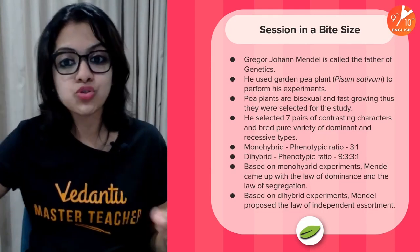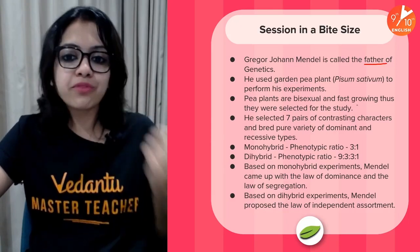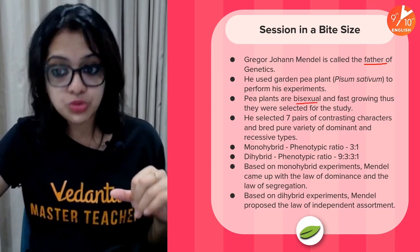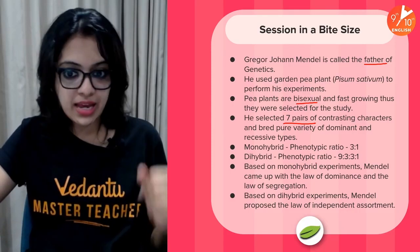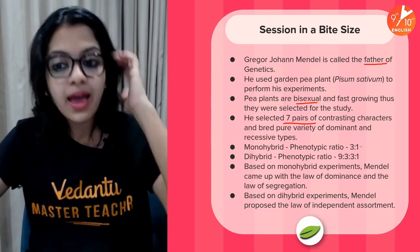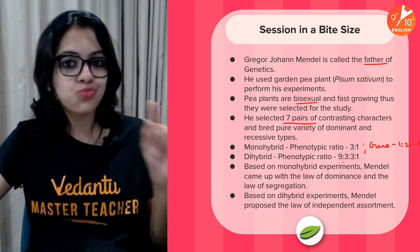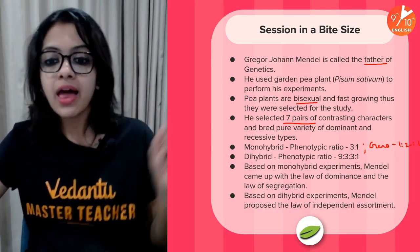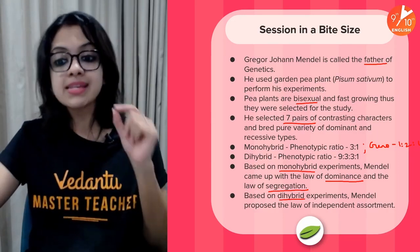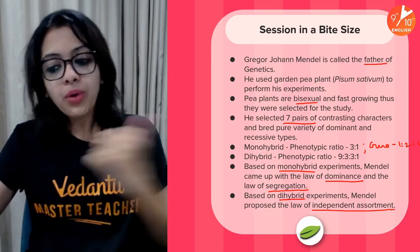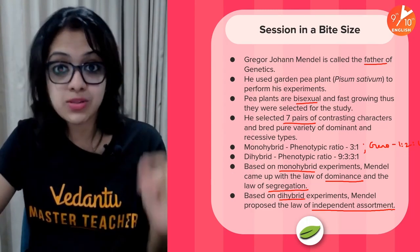Here is the session in a bite-size for quick revision: Gregor Johann Mendel is called the father of genetics. He used the garden pea plant Pisum sativum. Pea plants are bisexual and fast-growing. He selected seven pairs of contrasting characters and bred pure dominant and recessive varieties. Monohybrid phenotypic ratio is 3:1 and genotypic ratio is 1:2:1. Dihybrid phenotypic ratio is 9:3:3:1. Mendel's monohybrid experiments gave the law of dominance and law of segregation; dihybrid experiments gave the law of independent assortment.